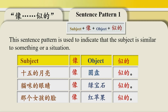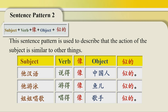Sentence pattern 1: This sentence pattern is used to indicate that the subject is similar to something or a situation. 十五的月亮像圆盘似的。猫咪的眼睛像绿宝石似的。那个女孩的脸像红苹果似的。Sentence pattern 2: This sentence pattern is used to describe that the action of the subject is similar to other things.